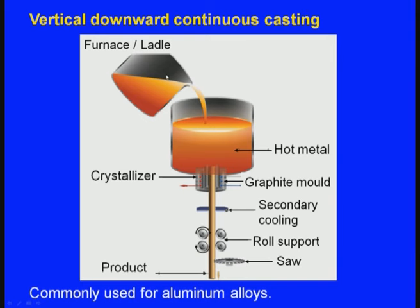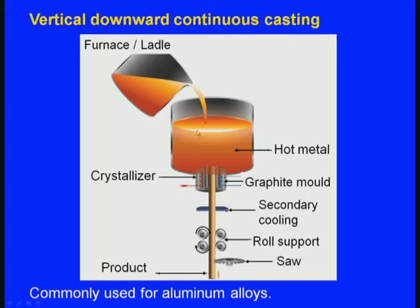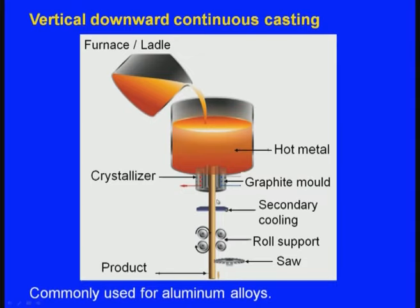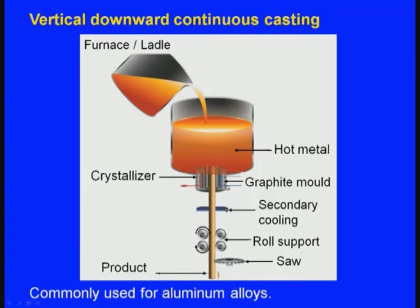Here we can see this is the furnace, in which the molten metal is there. This is the tundish — a local reservoir which accommodates the molten metal. Below the tundish there is a graphite mould. The molten metal from the ladle is poured into the tundish, and from the tundish the molten metal will be flowing through the graphite mould. As it is flowing, there is a cooling system, and also a crystallizer, because of which it solidifies as it is going out of the graphite mould.